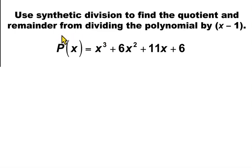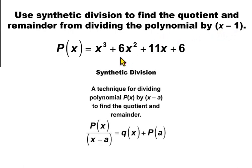Use synthetic division to find the quotient and remainder from dividing the polynomial by x minus 1. P(x) = x³ + 6x² + 11x + 6. Synthetic division is a way of dividing one polynomial by a linear binomial to find the quotient and remainder.